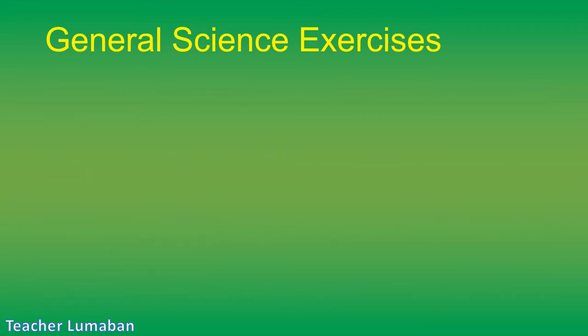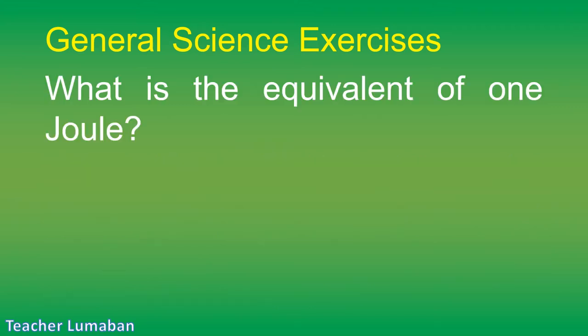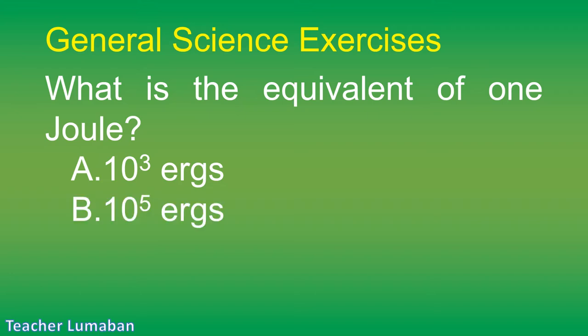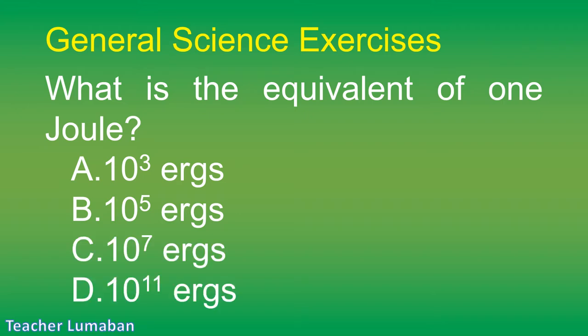What is the equivalent of 1 joule? Letter A: 10 to the 9 ergs. Letter B: 10 to the 5 ergs. Letter C: 10 to the 7 ergs. Letter D: 10 to the 11 ergs.